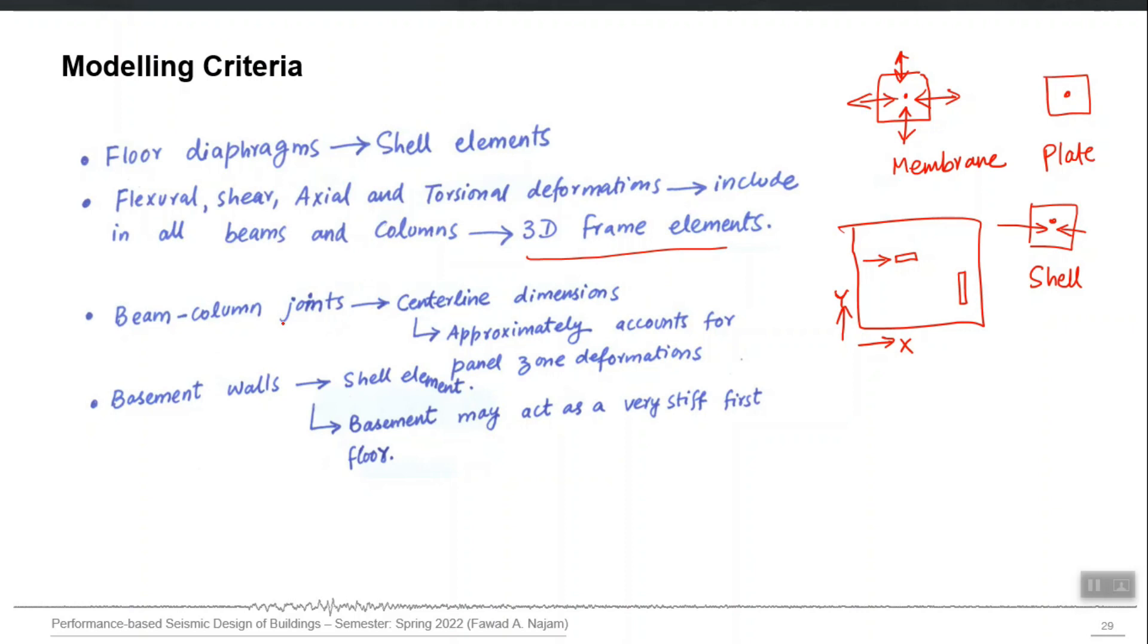Beam-column joints, we can use centerline dimensions and it can approximately account for panel zone deformations. Basement walls, we can use shell element.